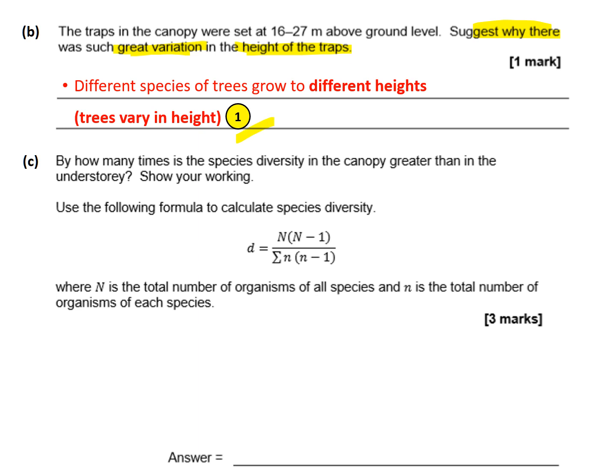Question c asks by how many times is the species diversity greater in the canopy versus the understory, and says to show your working. We'll use the index of diversity equation, which will be given in the exam — you need to practice it but don't need to memorize it. The uppercase N is the total number of organisms of all species added together, while lowercase n is the total number of individuals of each specific species.